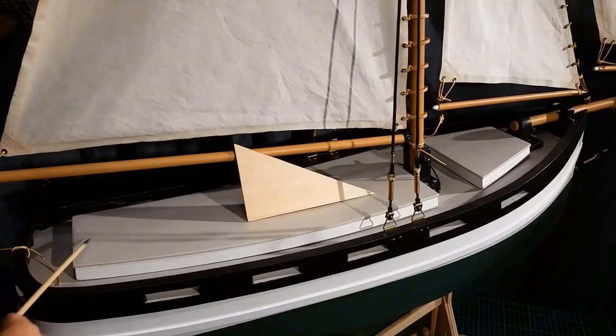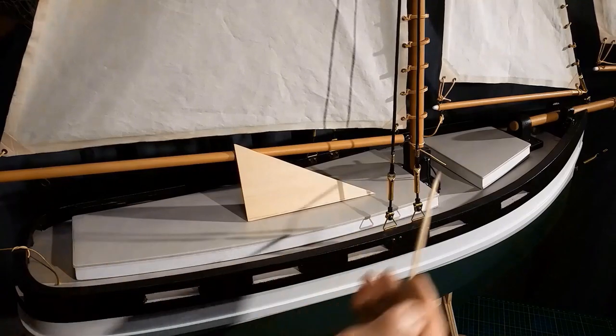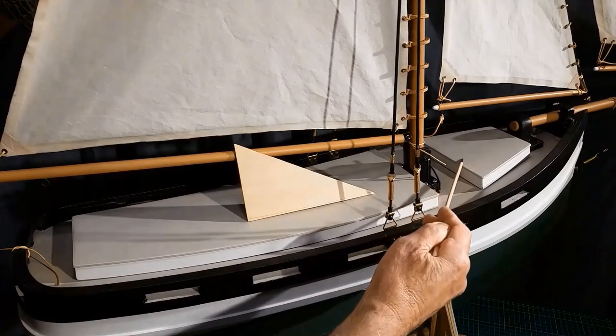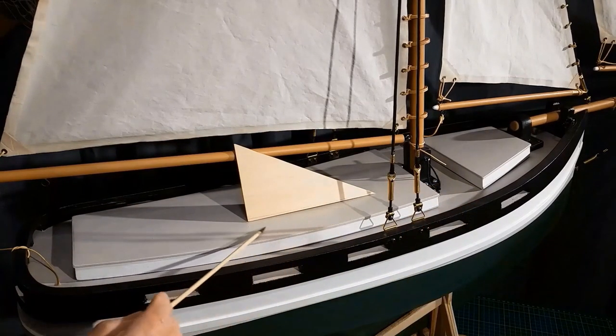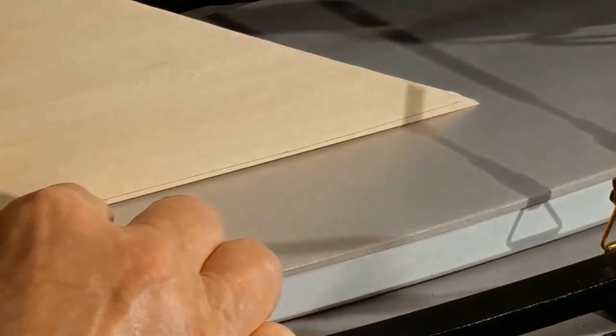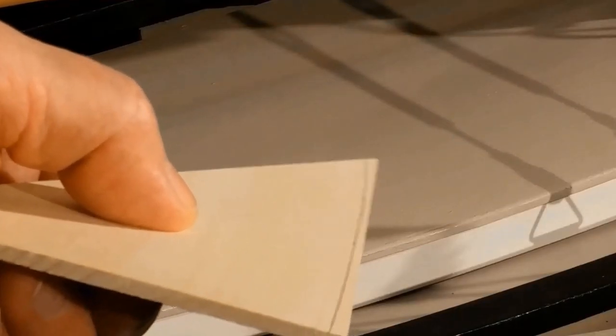I'd like to build a hatch here, a hatch up forward, and a skylight here. So I have my skylight fit properly. I'm getting my pencil and I'm making a line. Now I'll cut out that curve.